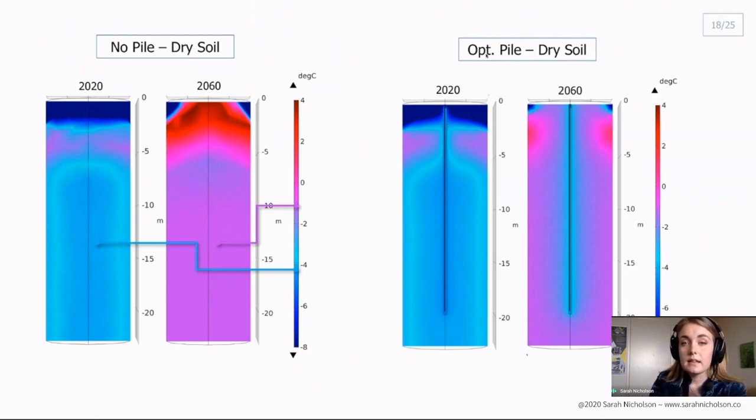In comparison, this case has the optimized pile, so using that previous geometric study, we optimized the pile size and then performed it in the same soil conditions as this one. So in the first year, it starts around the same mean ground temperature, but after 40 years, there is some reduction in the warming of the soil. You can see here a surrounding area which has been cooled by the pile's application.